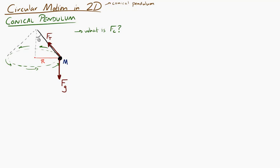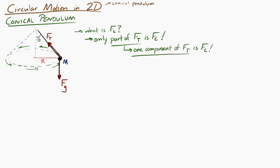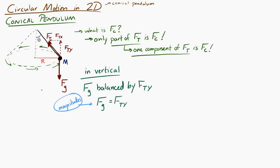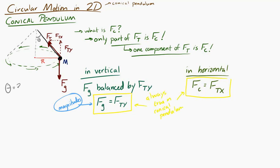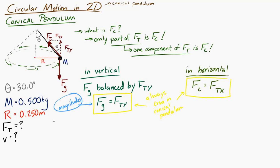Only one component of the tension force acts as the centripetal force. In the vertical direction, the weight is balanced by the y-component of the tension force. In the horizontal direction, the centripetal force — directed toward the center — equals the x-component of the tension force. These two equations are always true for a conical pendulum. For example, if the angle is 30 degrees, the mass is 0.5 kg, and the radius is 0.250 meters, we can find the tension and speed.